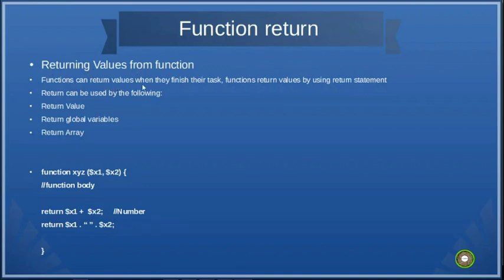Functions can return value or values when they finish their task. Functions return values by using the return statement. It can be used in the following ways: you can return a value, you can return global variables, and you can return an array.